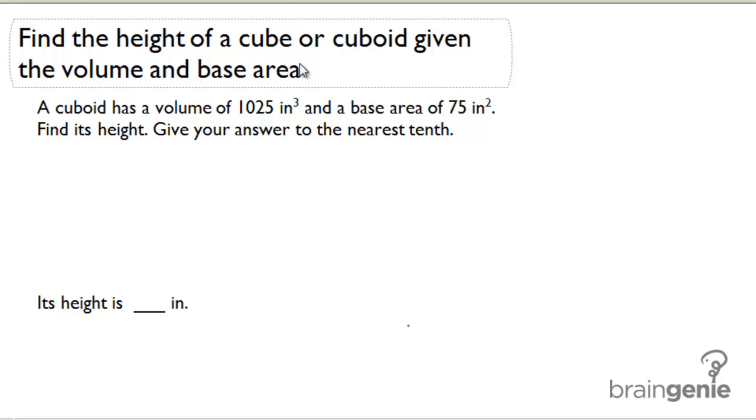For the next problem we're going to find the height of the cuboid given the volume and the base area. This is similar to the last one where we're going to work backwards. We're going to use that formula V equals capital B times H where capital B stands for the base area.